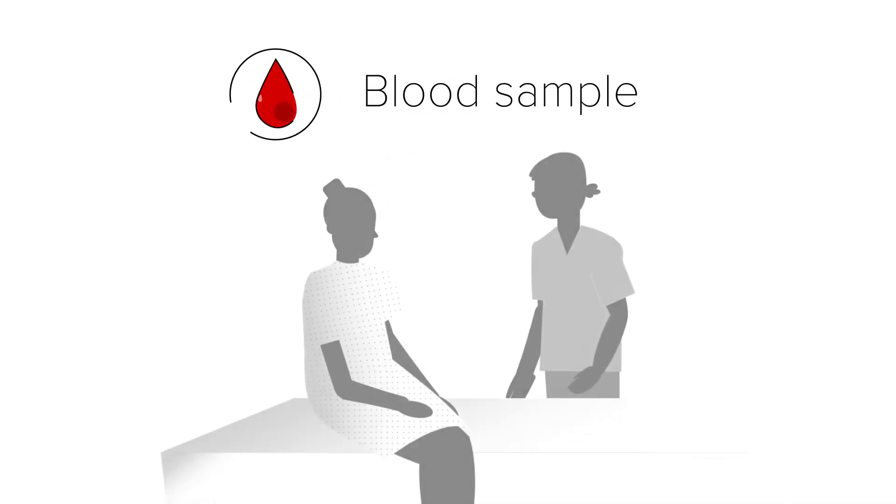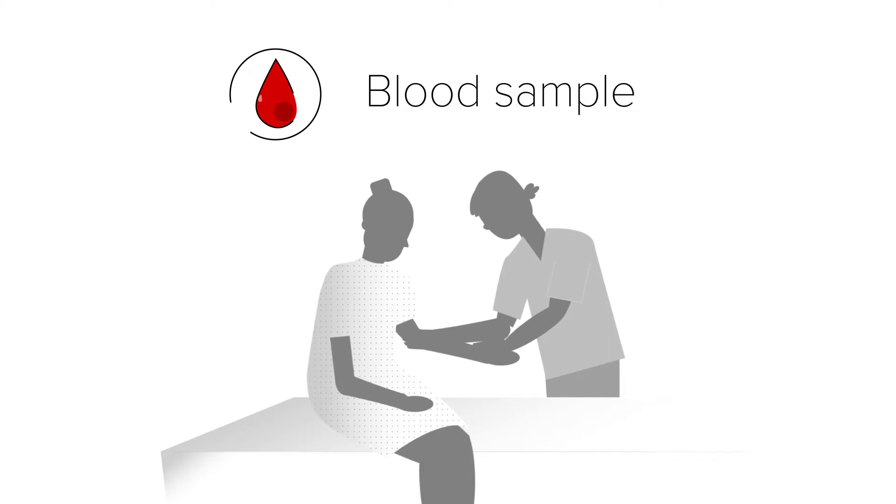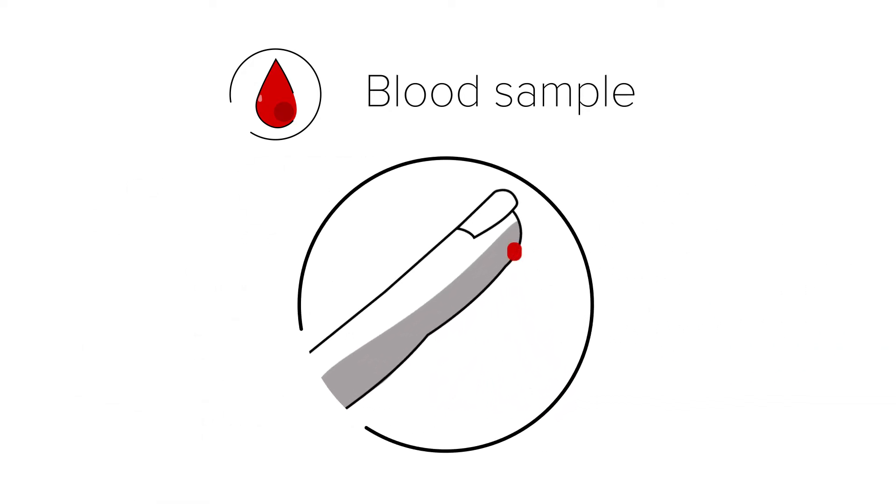If the doctor only needs a blood sample for your FISH procedure, it's all pretty simple. It usually happens in one of two ways. In the first, a nurse or clinician inserts a needle into a vein, usually in the fold of your arm, to remove a small amount of blood. The nurse may also do a finger prick.